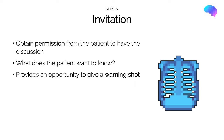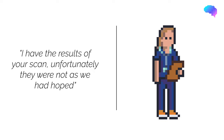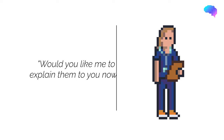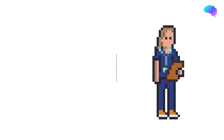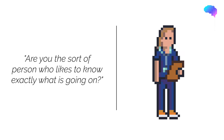Once we've established the patient's perspective, the next stage in SPIKES is invitation. This involves obtaining permission from the patient to deliver the news, for example the results of a recent scan. Although most patients will want to know all of the details, you should not assume this. This also gives an opportunity to give a warning shot — to warn the patient that bad news is coming. For example, you could say: 'I have the results of your scan. Unfortunately, the results were not as we had hoped. Would you like me to explain them to you now?' Another challenge is finding out the level of detail the patient wishes to know. One question you can ask is: 'Are you the sort of person who likes to know exactly what's going on?' This will help you gauge the level of information to provide.